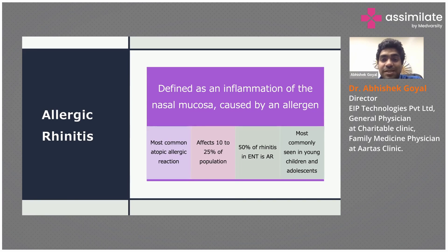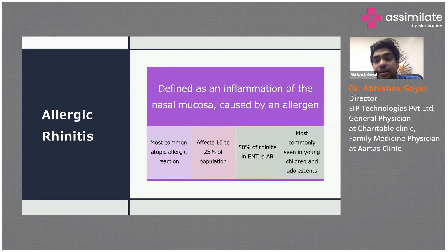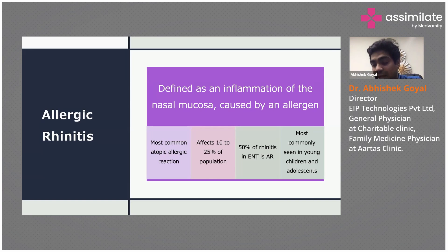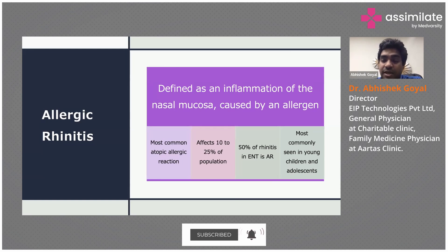Allergic rhinitis is the most common atopic allergic reaction, affecting 10 to 25% of the population. In ENT clinics, 50% of rhinitis patients have allergic rhinitis. Generally, patients start experiencing it at a young age — it is rare for someone to develop allergic rhinitis for the first time in middle age without having had it since childhood.